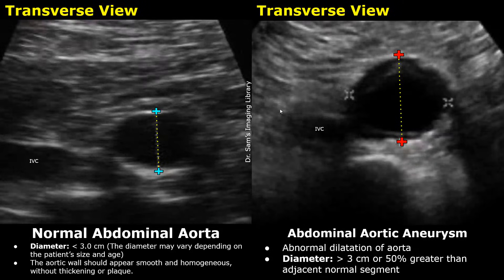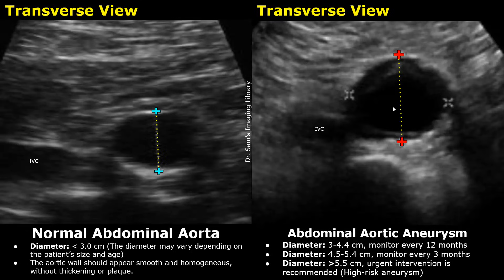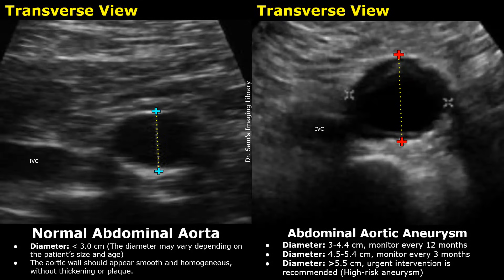This is a transverse image showing an aortic aneurysm with a diameter greater than 3 cm. Many aortic aneurysms are seen incidentally on ultrasound and are asymptomatic. Small aneurysms have a diameter between 3 and 4.4 cm and require monitoring every 12 months. A medium aneurysm is between 4.5 and 5.4 cm, requiring monitoring every 3 months. A large, high-risk aneurysm has a diameter greater than 5.5 cm, with a very high risk of rupture, so immediate intervention is required.